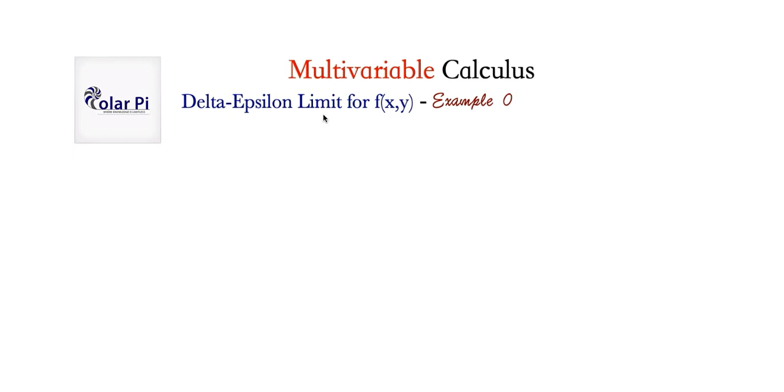And here in this video and the next five, so a total of six examples, we're going to look at delta epsilon limits for a function of two variables, f of x comma y. Now, the definition in Calc 2 is very similar to the definition here. That is, the delta epsilon limit definition for a function of a single variable and that of a function of two variables are analogous.